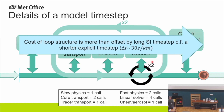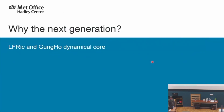Pretty much most weather forecasting centres use a semi-implicit time stepping like this. By and large, most climate models use an explicit time step, though that's a generalization.